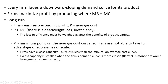This market structure gives us variety in consumption, and that is a benefit. The price will also exceed the minimum point on the average cost curve, so firms are not able to take full advantage of economies of scale — firms have excess capacity. The output is less than the minimum point on the average cost curve. Excess capacity is smaller when the firm's demand curve is more elastic or flatter. A monopoly, on the other hand, would have greater excess capacity given a more relatively inelastic or steeper-looking demand curve.